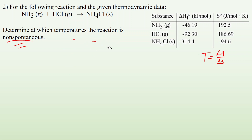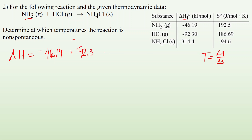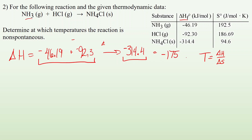This is a multi-step problem because delta H and delta S aren't given directly. First, finding delta H: using standard formation values, NH3 is −46.19 and HCl is −92.3 as reactants, and NH4Cl is −314.4 as the product. Taking products minus reactants gives delta H of −175.91 kilojoules per mole. It's important to note these units are in kilojoules per mole, while entropy values will be in joules per mole, so we'll need to address that unit mismatch.